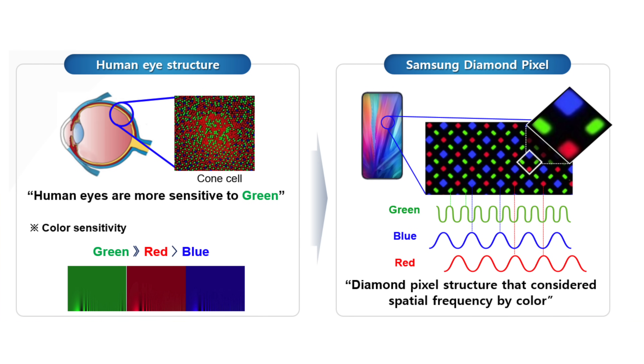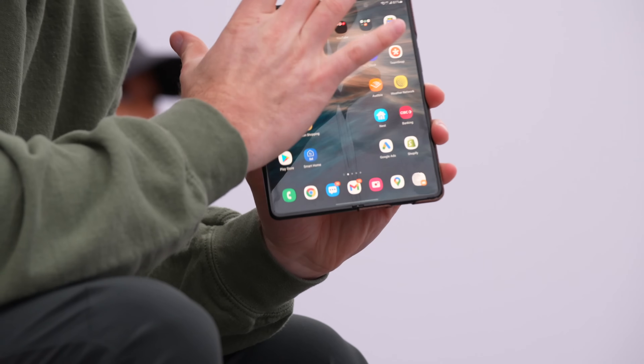This diamond pixel structure is developed in conjunction with the way the human eye perceives color — specifically green. The human eye is more sensitive to green light compared to red and blue. The UTG technology — Ultra Thin Glass — is the material that lives on the internal display of the Fold products. The key feature is that it's flexible.